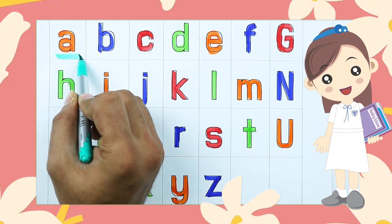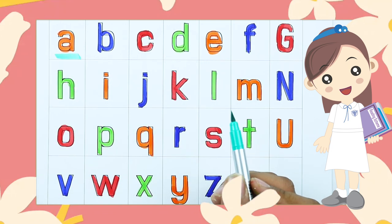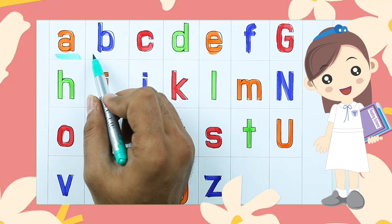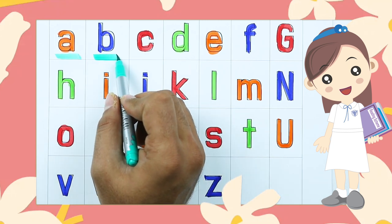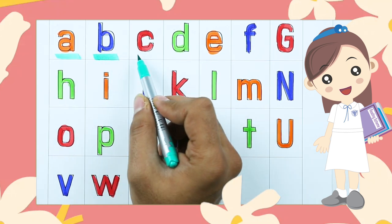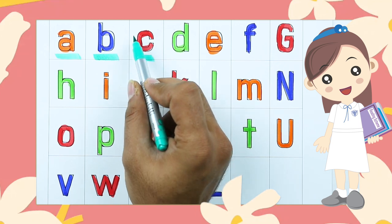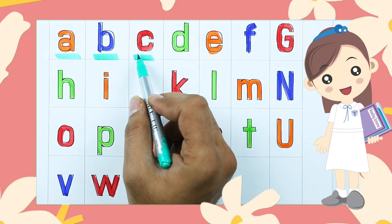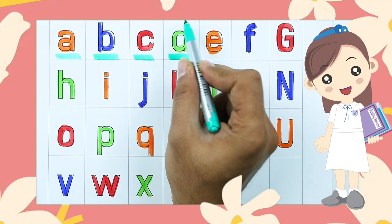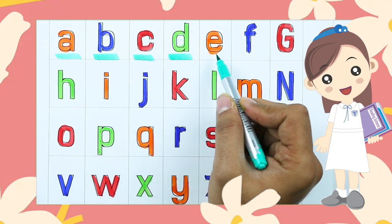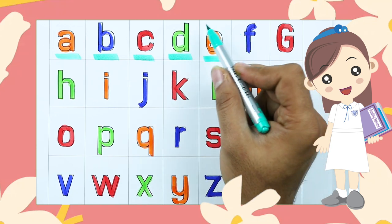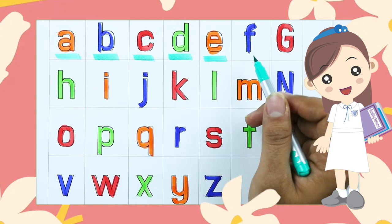Small a. A for apple. B. B for ball. C. C for cat. D. D for dog. E. E for elephant.